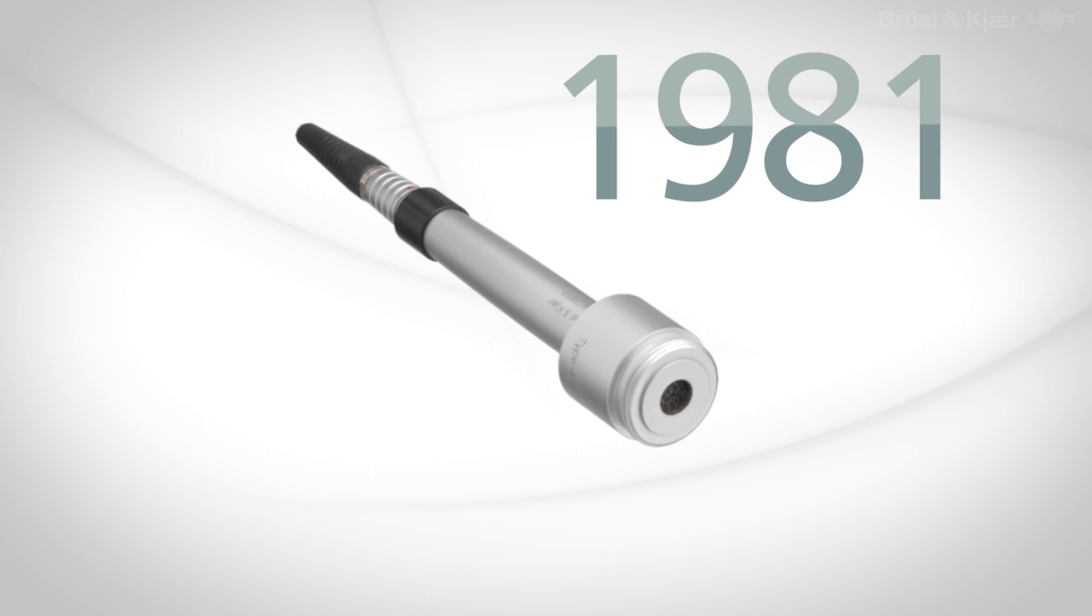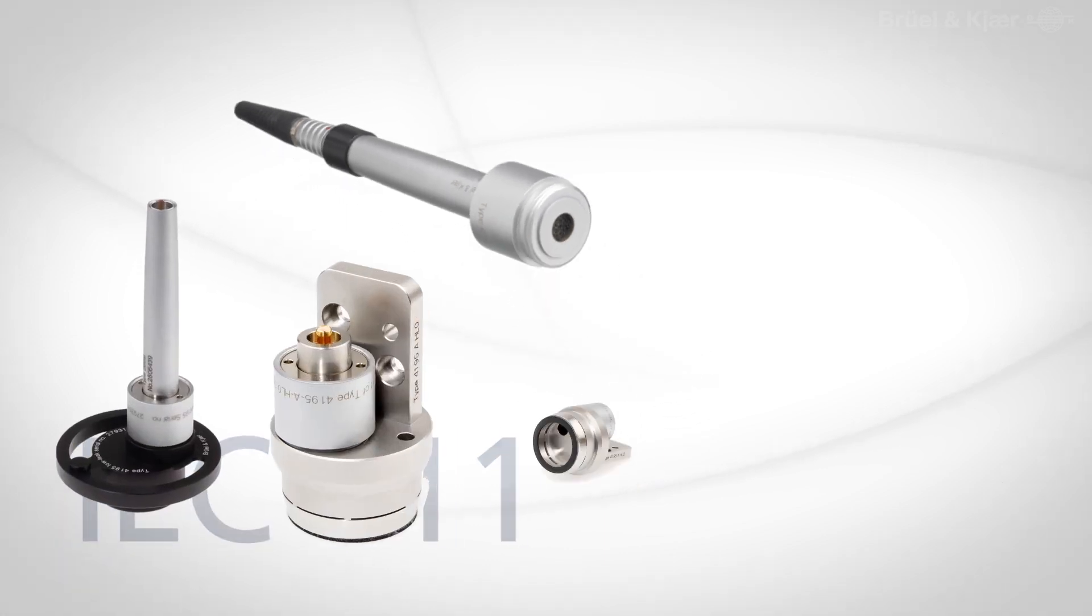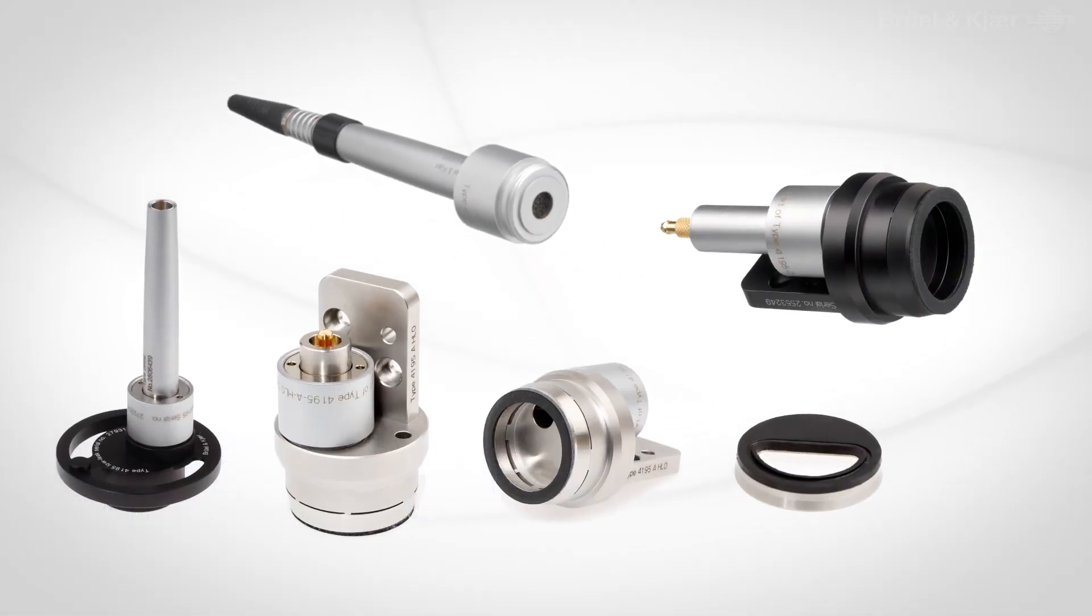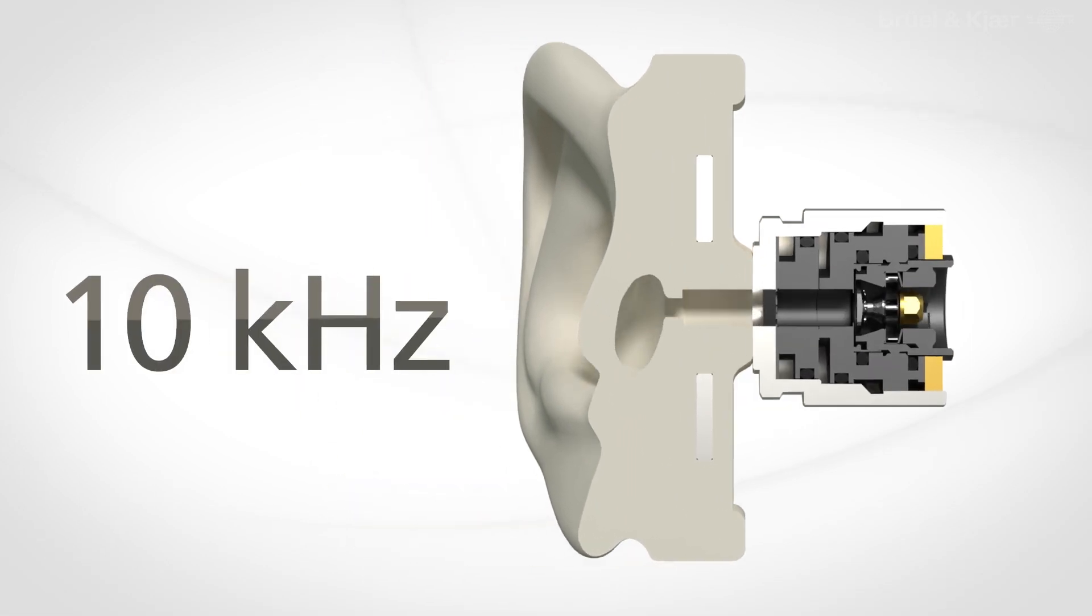In 1981, a new simulation coupler, IEC 711, became standardized and known as a 711 coupler. With a range of adapters, it could be used for insert type earphones and hearing aids. It extended the frequency range to 10 kilohertz.